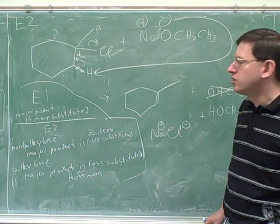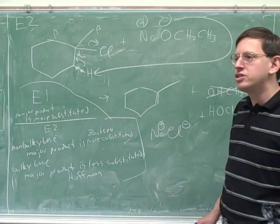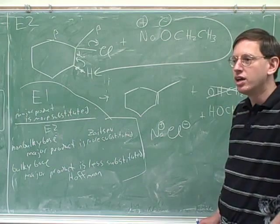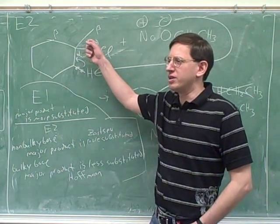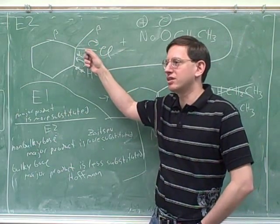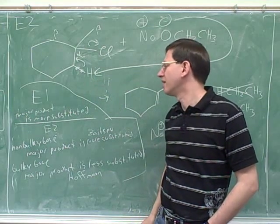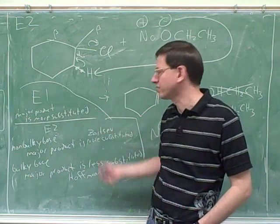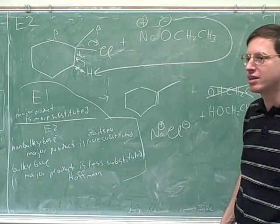This, by the way, is what's called regiochemistry. Regiochemistry is when there's more than one region in the molecule that can react, and you have to predict which one. Well, if there's more than one beta carbon with beta hydrogens, you have to determine which region is preferable. So that's regiochemistry. You'll be seeing more and more regiochemistry as time goes on.